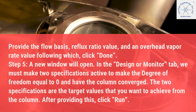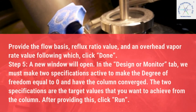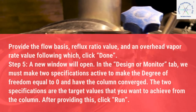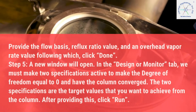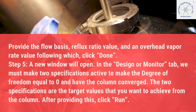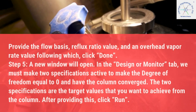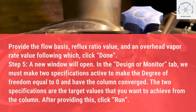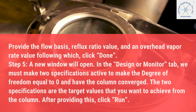Step 5: A new window will open. In the Design/Monitor tab, we must make two specifications active to make the degree of freedom equal to zero and have the column converged. The two specifications are the target values that you want to achieve from the column. After providing this, click Run.